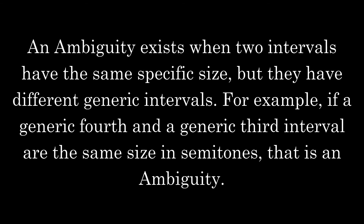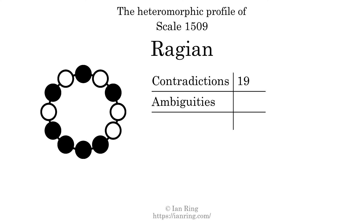An ambiguity exists when two intervals have the same specific size, but they have different generic intervals. For example, if a generic fourth and a generic third interval are the same size in semitones, that is an ambiguity. The number of ambiguities in this scale is 38.